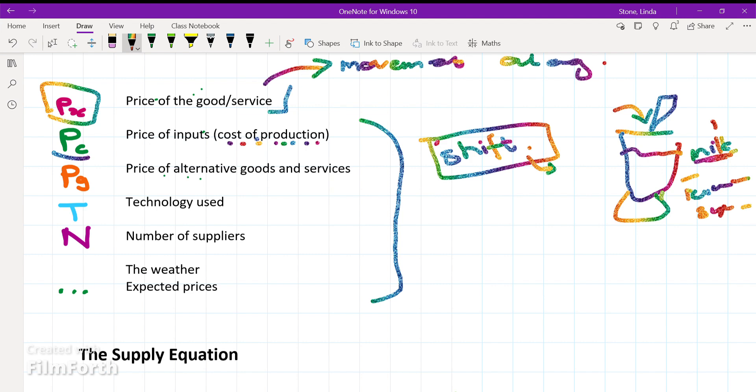Then, the price of alternative goods and services. These can be complements and substitutes in production. For instance, a complement in production is something that is produced together with a product, usually a byproduct. So if I am producing chickens, then feathers might be a byproduct along with chicken meat.